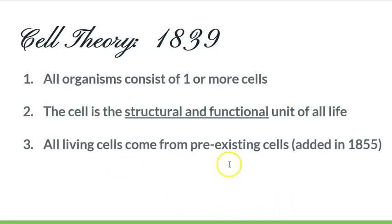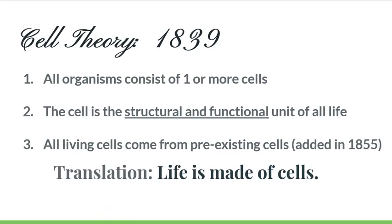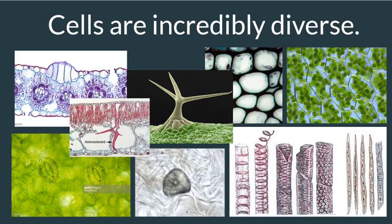All living cells come from pre-existing cells — this point was added later to cell theory. There used to be the idea that life could spontaneously generate, but through experiments and observation we found that any cell, like an egg that develops into an organism by dividing and multiplying, came from some pre-existing cell. Cells don't spontaneously generate. We don't know how the first cell came to be, but there are many hypotheses around that. The big translation is that life is made of cells.